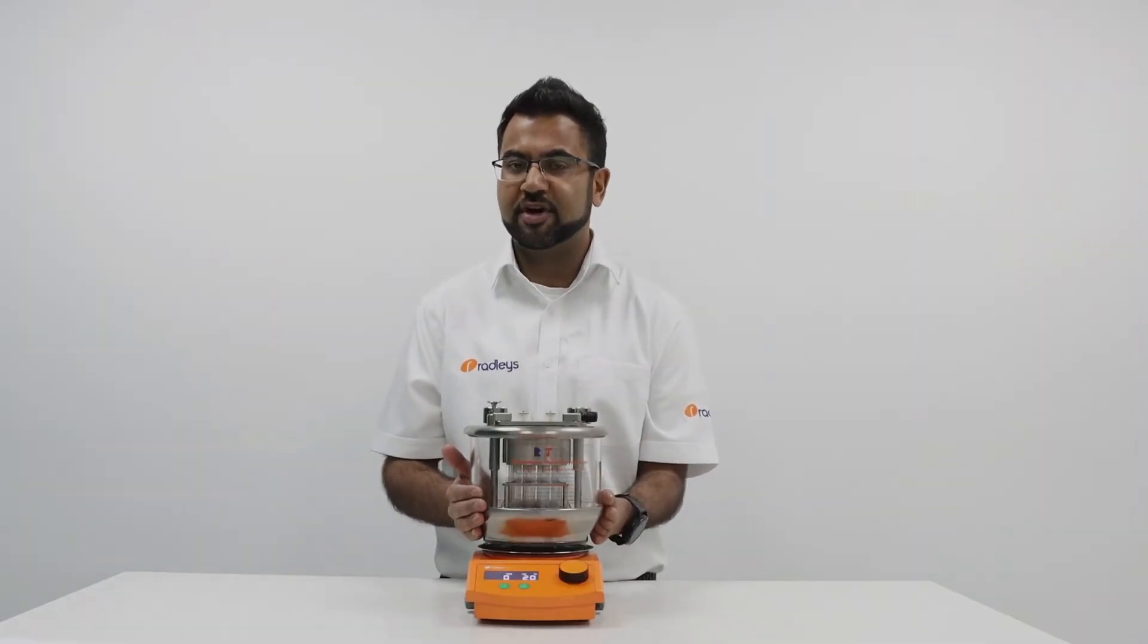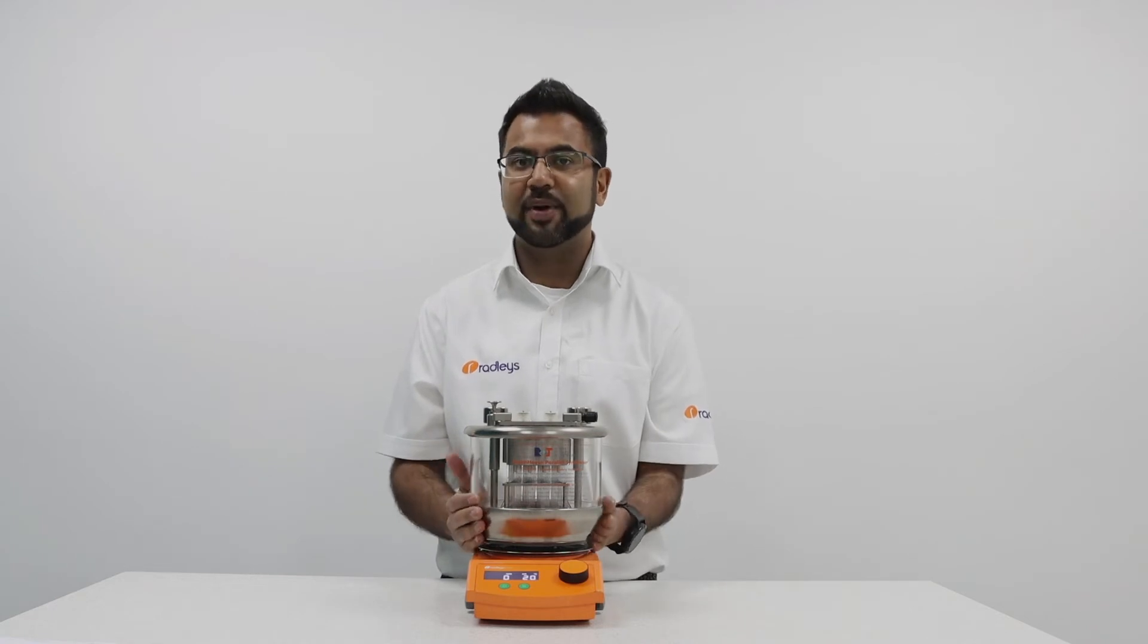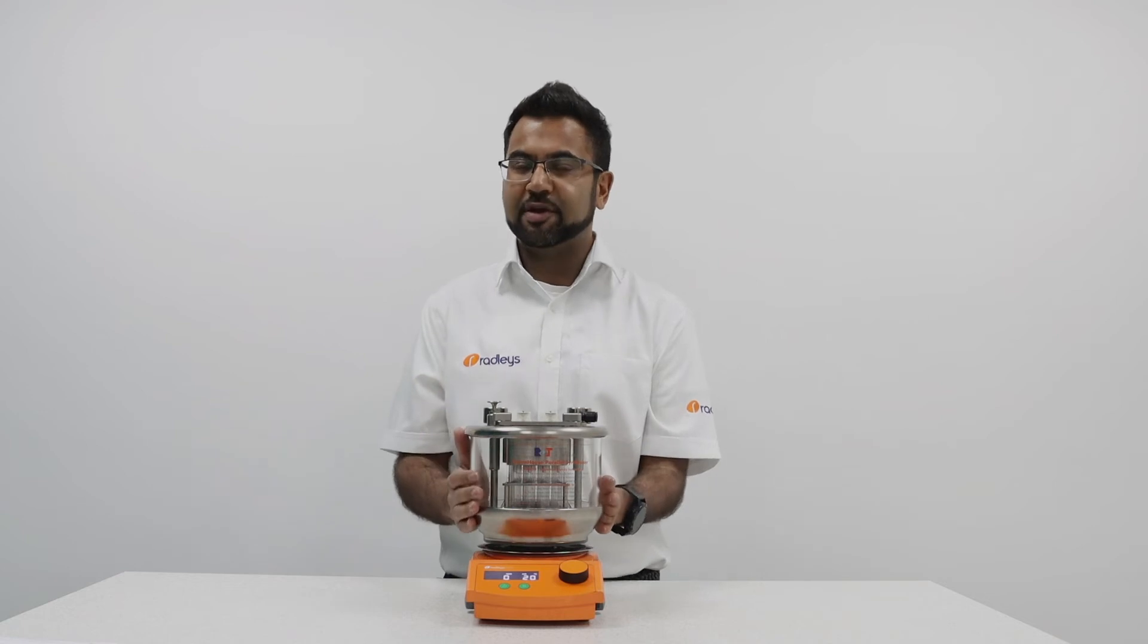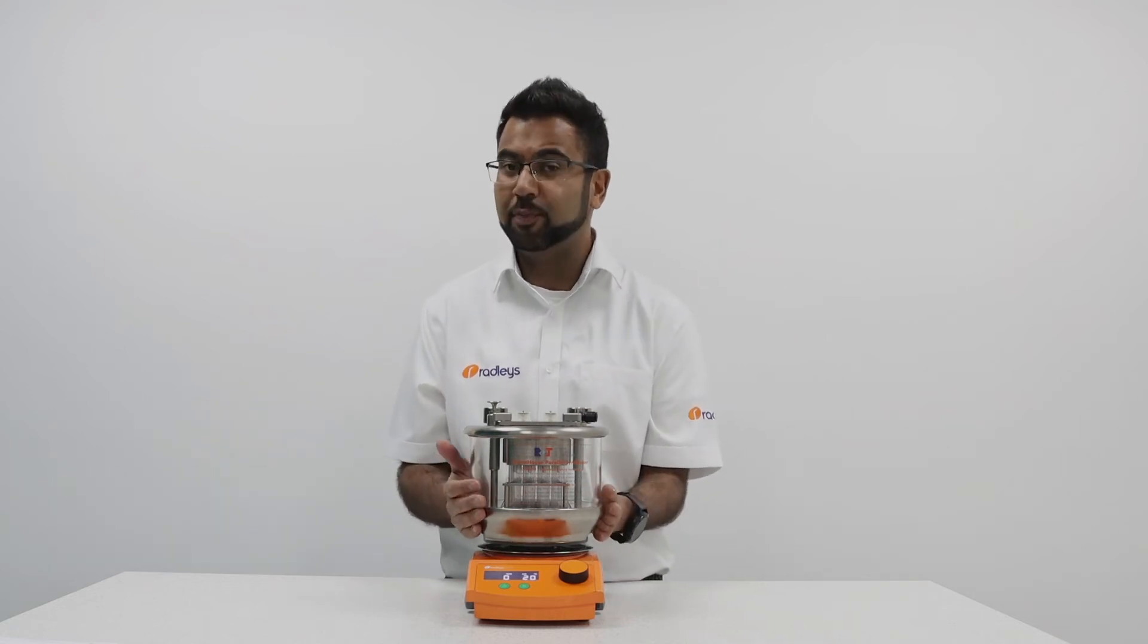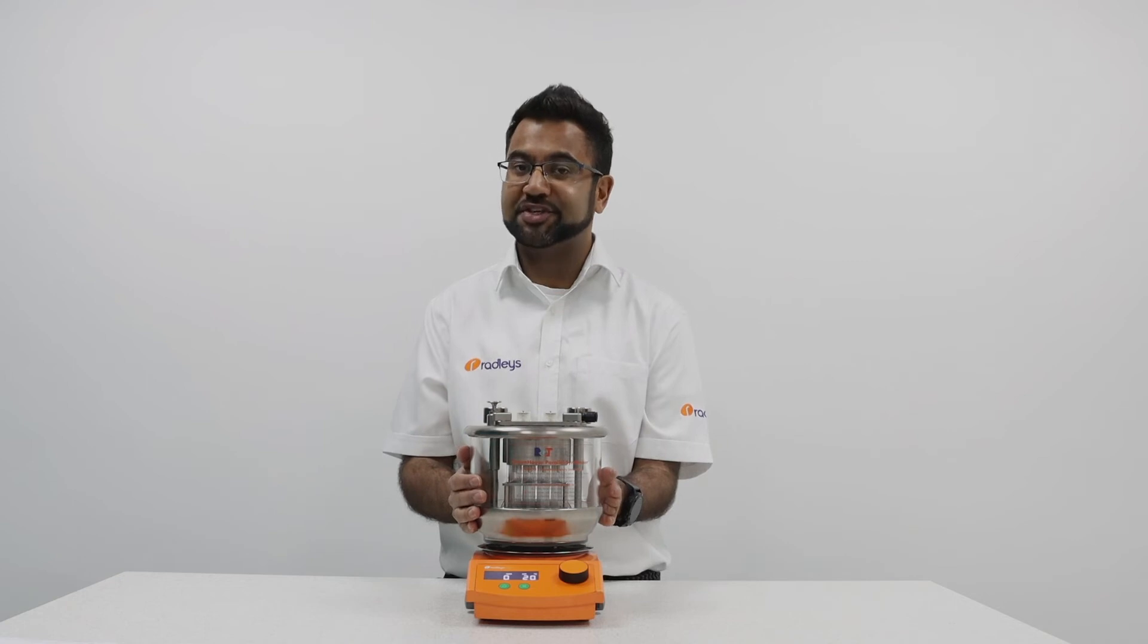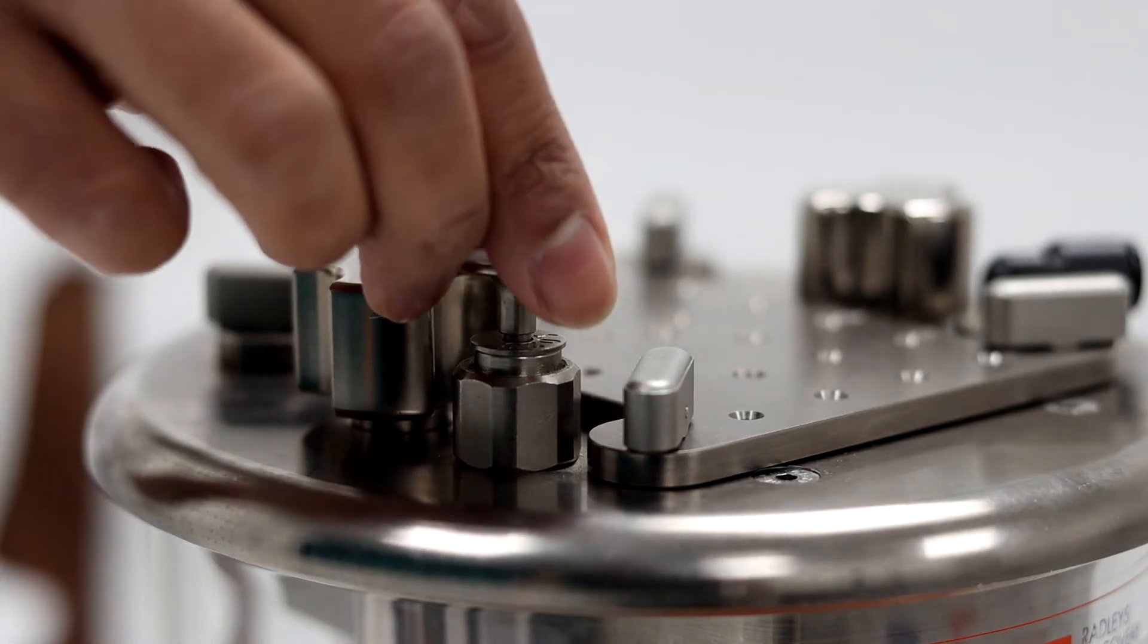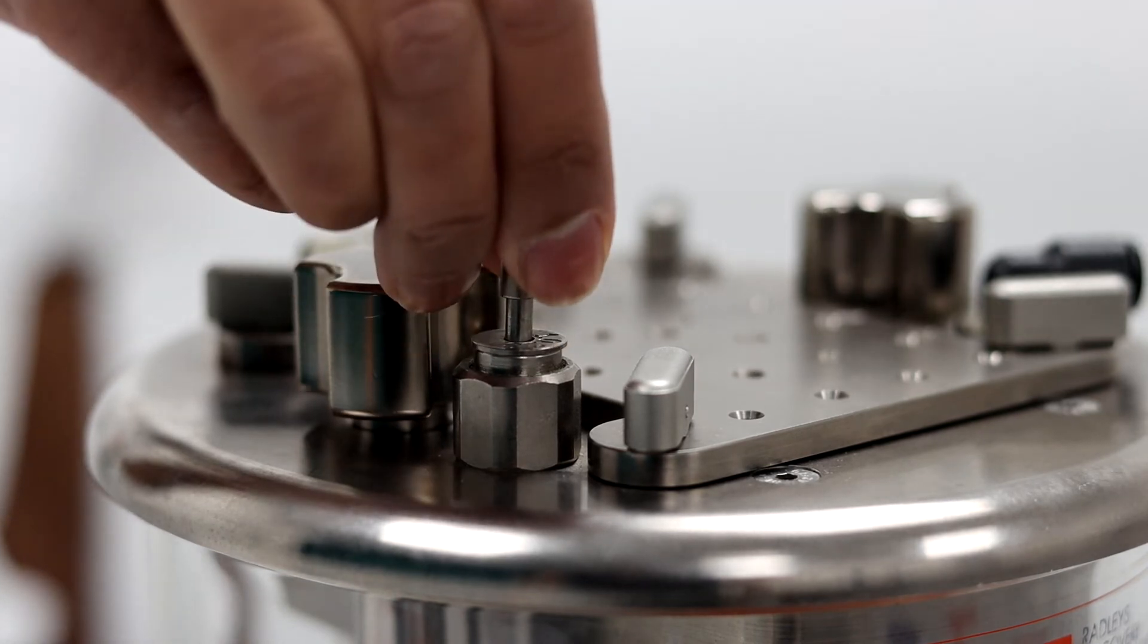To ensure you do not over pressurize your greenhouse synthesizer it's best to have a regulated gas supply going into it. We recommend pressures of 0.5 psi to 1 psi if you're going to perform reactions under an inert atmosphere. If you do over pressurize your greenhouse system we do have this pressure relief valve on top.